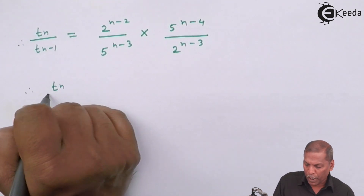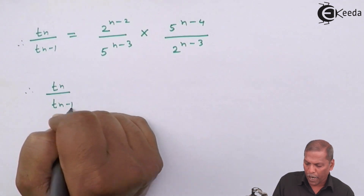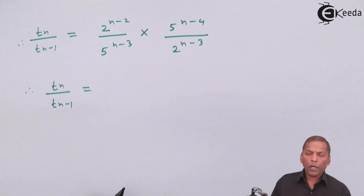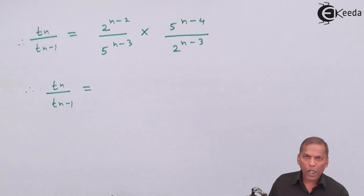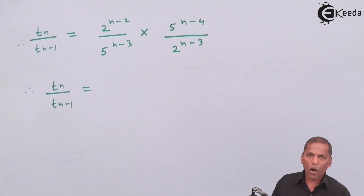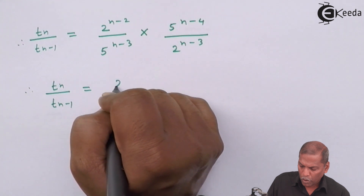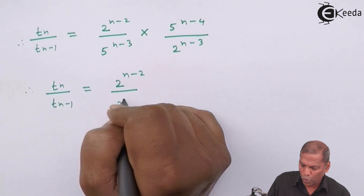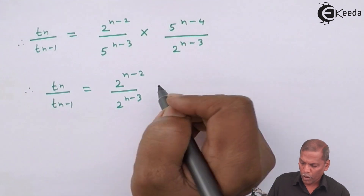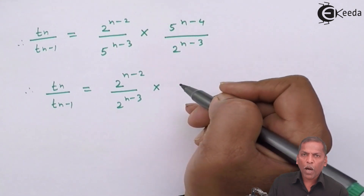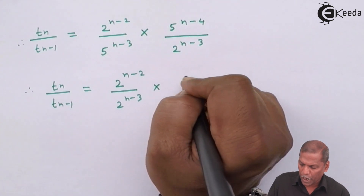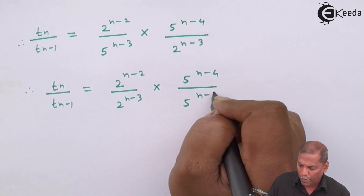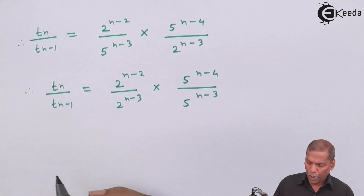Therefore, T_n upon T_(n-1) is equal to 2 raised to (n minus 2) upon 2 raised to (n minus 3), multiplied by 5 raised to (n minus 4) upon 5 raised to (n minus 3). Now we collect the similar terms — the powers of 2 and the powers of 5 separately.